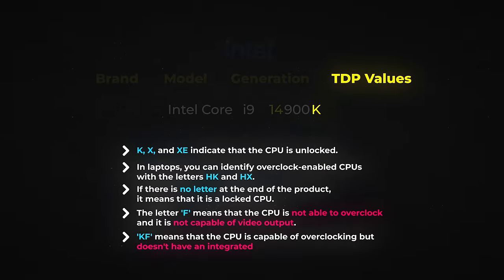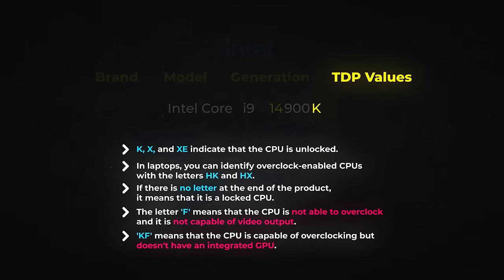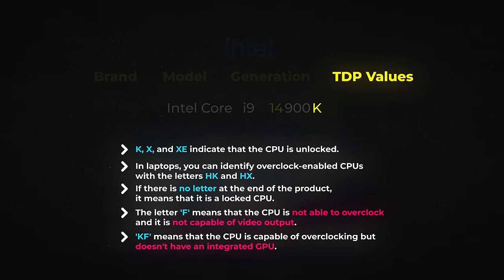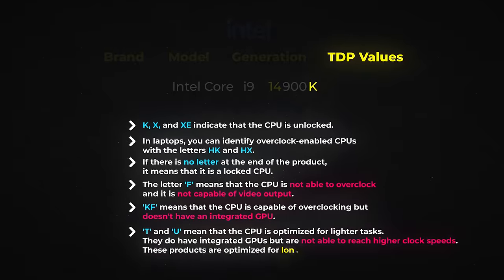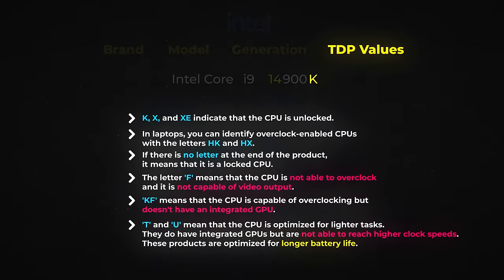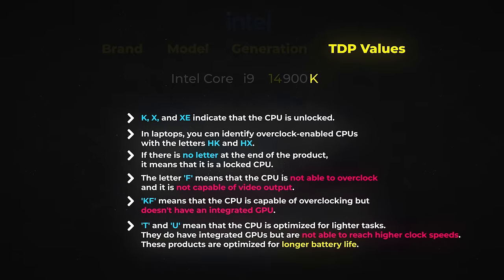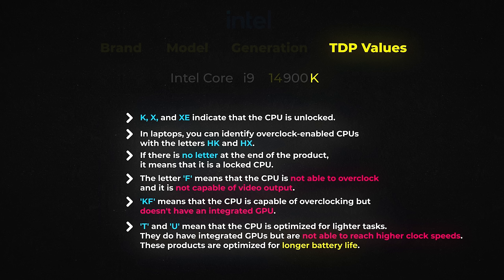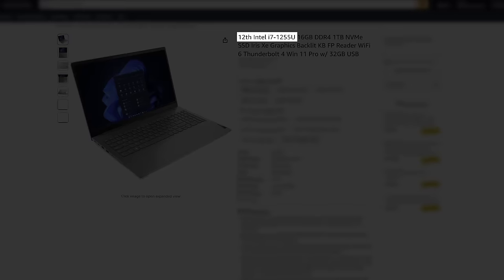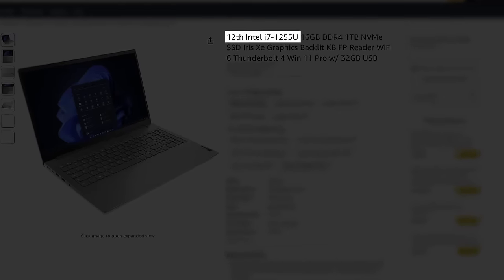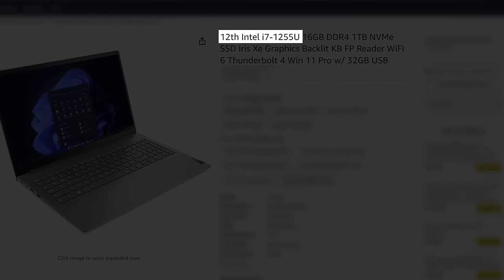KF means that the CPU is capable of overclocking, but doesn't have an integrated GPU like the F line — you need a dedicated GPU for this. They could be a good option if you are interested in relying solely on your dedicated GPU. T and U mean that the CPU is optimized for lighter tasks. They do have integrated GPUs but are not able to reach higher clock speeds. These products are optimized for longer battery life. Chromebooks aimed towards entry-level users use these CPUs.